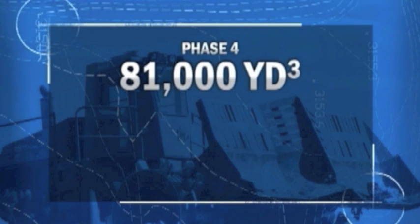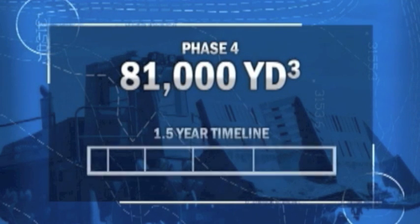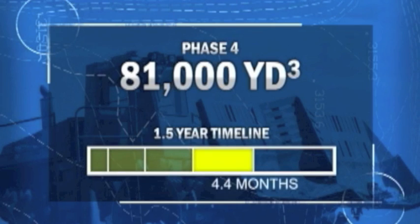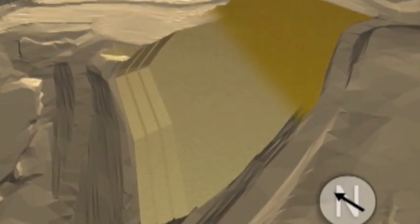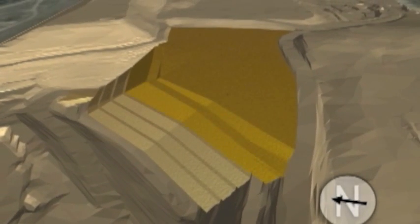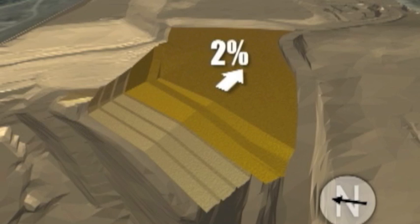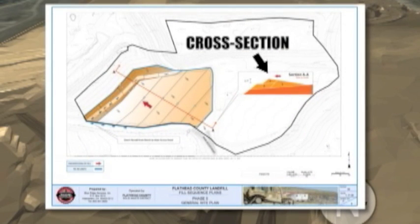Phase 4 represents nearly 81,000 cubic yards of filling, which we estimate will take approximately 4.4 months to complete. This sheet shows placement of a tapered lift as you create a grade reversal in this area. Please note that when completed, the top deck slopes 2% back to the east. We've anticipated that this will be created in three stages, as shown in this cross section. Remember, cross sections are typically labeled in chronological order starting with AA, BB, etc.